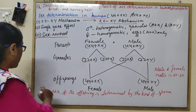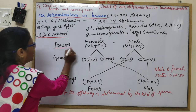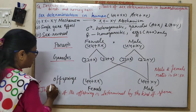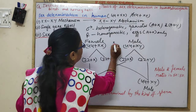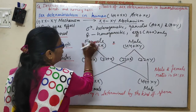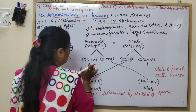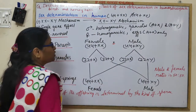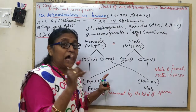This is very, very important. Do not forget to write: parents, gametes, the cross sign, and clearly label the offspring as female or male. These elements are very much important for scoring in genetics questions.